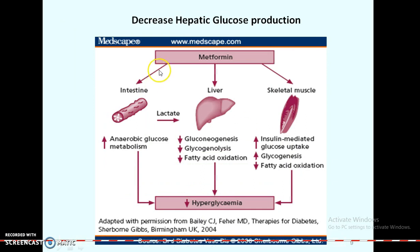In cases of hepatic glucose production, metformin acts on the liver to decrease gluconeogenesis, glycogenolysis, and fatty acid oxidation. Metformin also acts on skeletal muscles to increase insulin-mediated glucose uptake, while fatty acid oxidation is decreased.